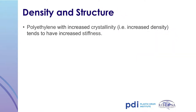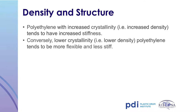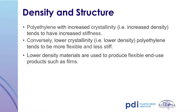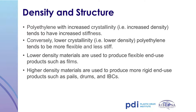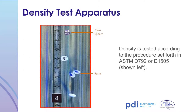How do density and crystallinity affect polyethylene properties? Polyethylenes with increased crystallinity or density tend to have increased stiffness, while resins with lower crystallinity or density are more flexible. Lower density materials are used to produce flexible products such as films and squeeze bottles, while higher density materials produce more rigid products such as drums, IBCs, and jerry cans. Density is measured using a gradient column apparatus comprised of alcohol and water; annealed resin is placed in the gradient and density is determined based on its position relative to a control bead of known density.